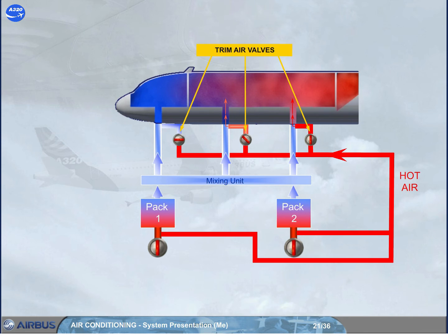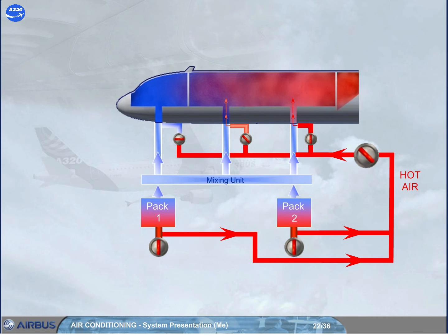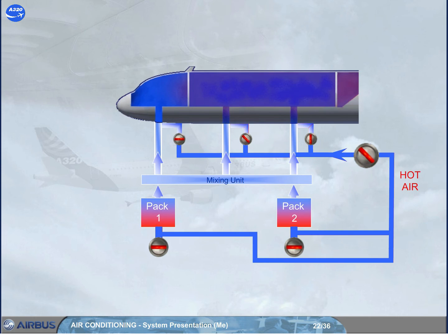The trim air valves are supplied via a hot air valve. It regulates the pressure of the hot air supplied to the trim system and works as a shut-off valve. The hot bleed air is supplied to the hot air valve downstream of the pack flow valves. This means that if the pack flow valves are closed, there is no air supplied to the trim system, and the hot air valve and the trim air valves will automatically close.